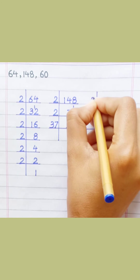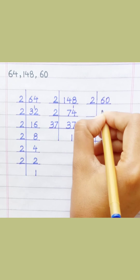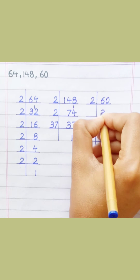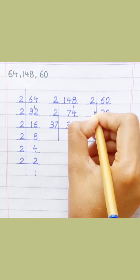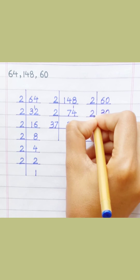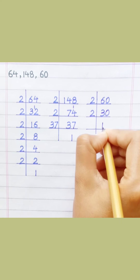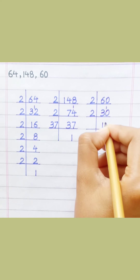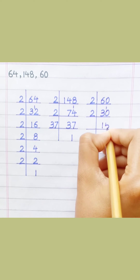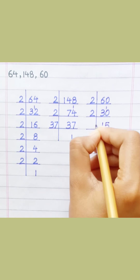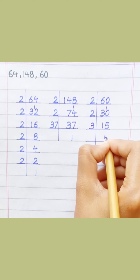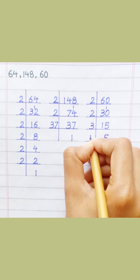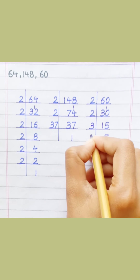Sixty. Two threes are six. Two zeros are zero. Two ones are two. Two fives are ten. Three fives are fifteen. Five ones are five.